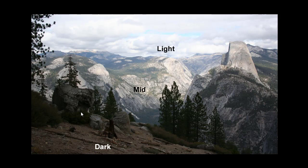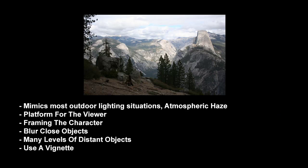Here is an example in an actual photograph — a photograph of Yosemite. You can see that the foreground is dark, then it goes to a mid value in the middle ground where Half Dome is, and then it's lightest way off in the distance. The main reason this is the most common is because it mimics most outdoor lighting situations where things get lighter in the distance due to atmospheric haze. Air has a little bit of opacity to it, and the more of it you look through — the further you look — the more that opacity takes over, causing things to look lighter in the distance.